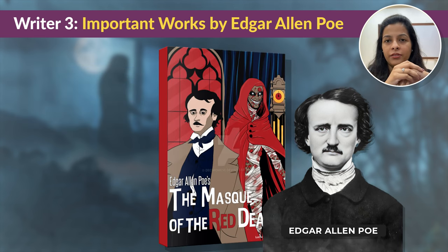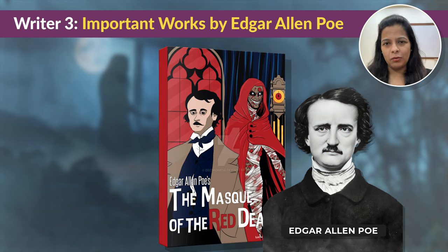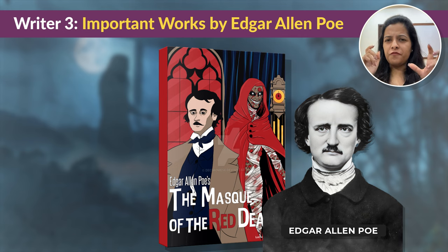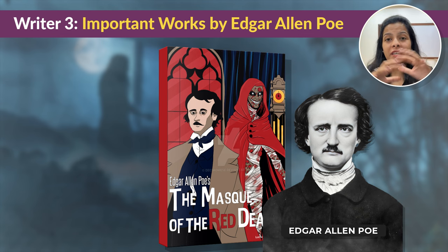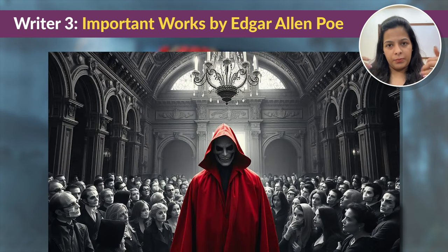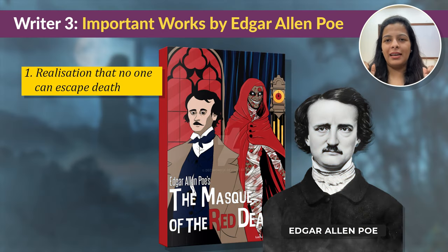The Mask of the Red Death is about a deadly plague called the Red Death spreading across the land and killing people quickly and painfully. Prince Prospero, a wealthy ruler, locks himself and his friends inside a castle to avoid the plague and throws a lavish masked party with music, dancing, and rich decoration. During the party, a mysterious figure dressed as the Red Death appears, and as it moves through the rooms, everyone realizes no one can escape death — and everyone in the castle dies, making death a very prominent theme.